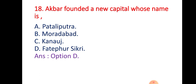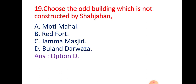Question 18: Akbar founded a new Mughal capital whose name is — Option A: Pataliputra; Option B: Moradabad; Option C: Kannauj; Option D: Fatehpur Sikri. The right answer is Option D — Fatehpur Sikri is the new capital founded by Akbar.